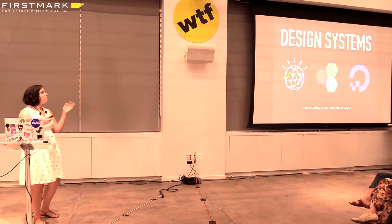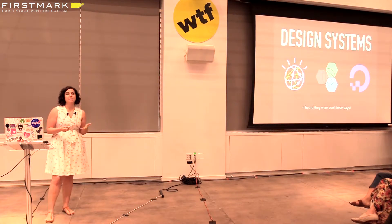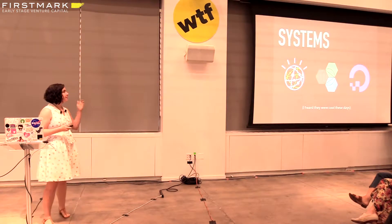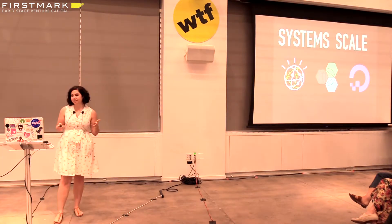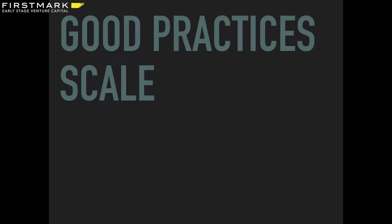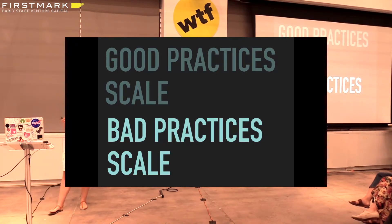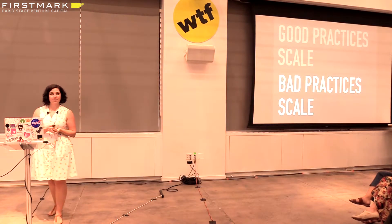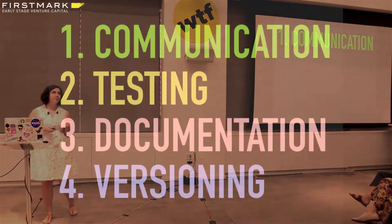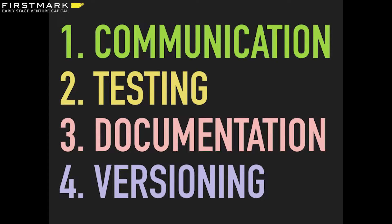I found design systems to be the best way to scale accessibility. It's a baseline — a path of least resistance for your users and for your company. Systems scale; they're made to scale. Good practices scale when you have a system like this, but keep in mind that bad practices scale too. So we have to inject good practices from the start. In this talk, I'll go through some basic tenets to allow design systems to scale good practices: communication, testing, documentation, and versioning.